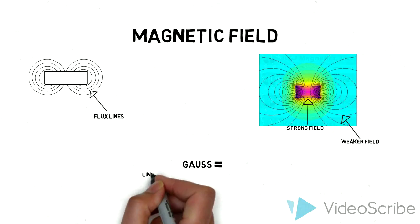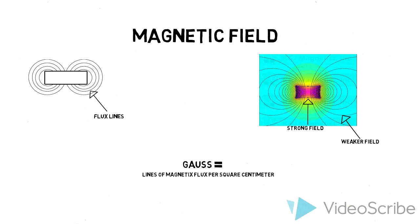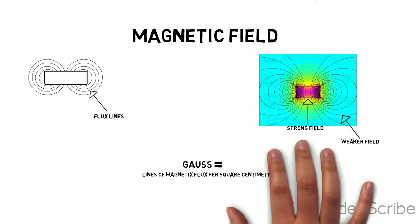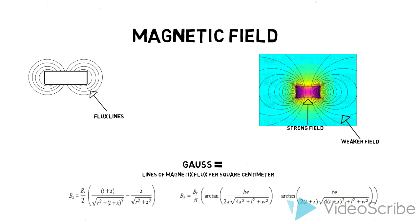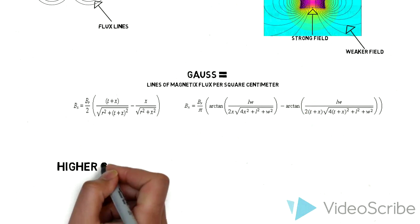The magnetic field is measured in terms of Gauss, which indicates the lines of magnetic flux per square centimeter. This can be figured out using some pretty complicated formulas, or using special equipment to measure it. But don't worry, we have it all figured out for you.